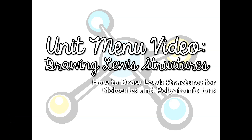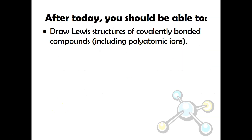Hi Chemists, welcome to your choice on your unit menu covalent compounds. In this video I am going to discuss with you how to draw Lewis structures for molecules and polyatomic ions. By the end of this video you should be able to draw Lewis structures of covalently bonded compounds including polyatomic ions. Make sure as you watch this video you are taking notes and you have your periodic table handy.